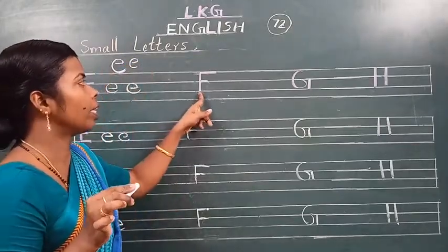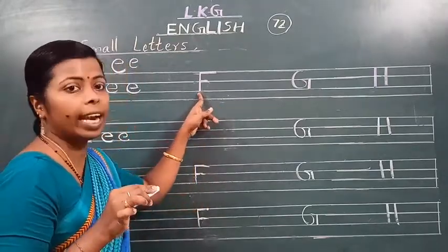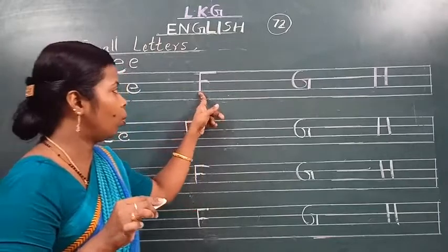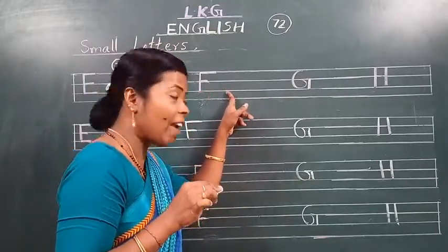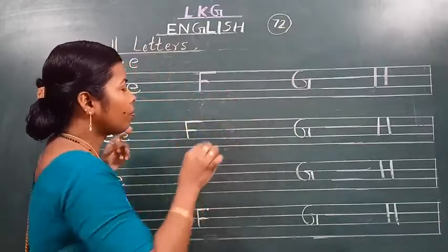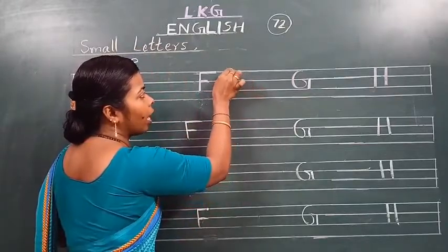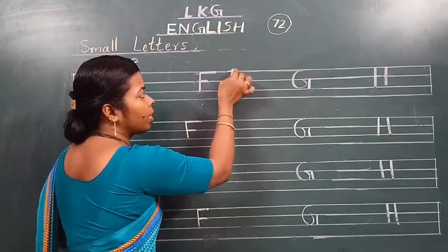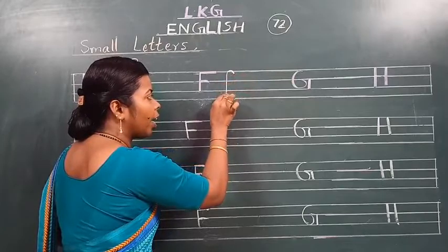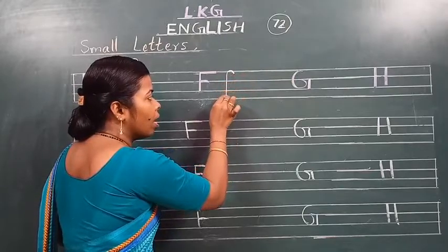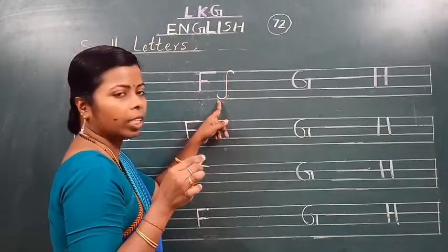Then next — which letter is this? This is F, capital F. Okay, you can do it. Here we go. Dhyan se dekho — oopar ki line se shuru karna hai. Top se start karna hai. Phir isko niche tak le jaana, then curve banana hai.